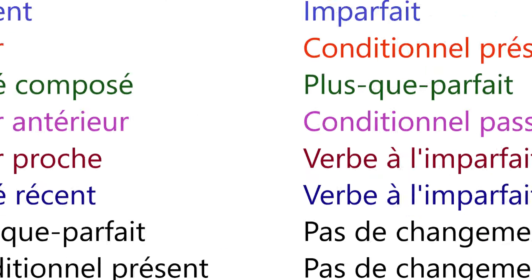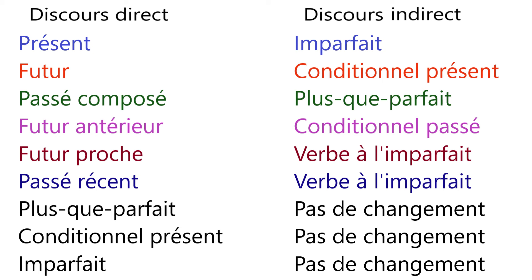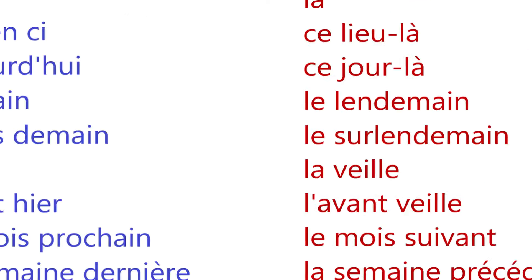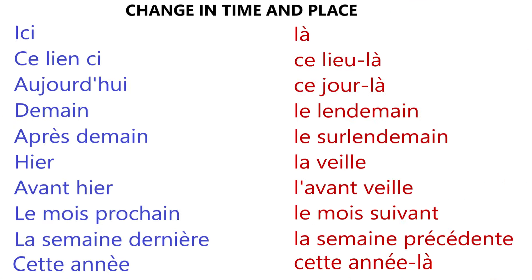Now we have a table which shows how the tenses change when converted to indirect speech. Let's also have a look at the words that show nearness in time or place.